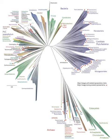From the first growth of the tree, many a limb and branch has decayed and dropped off, and these lost branches of various sizes may represent those whole orders, families, and genera which have now no living representatives, and which are known to us only from having been found in a fossil state.